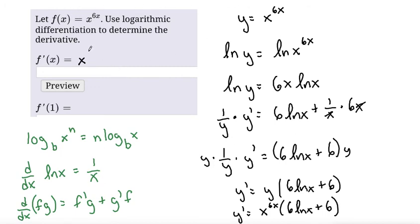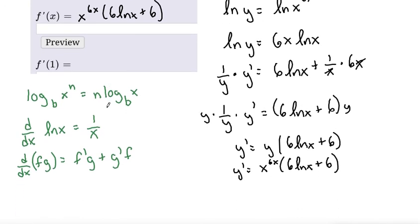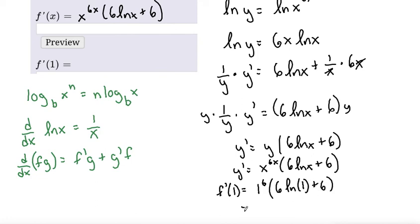So f prime of x equals x to the power of 6x times (6 ln x + 6). If we plug in x = 1, that gives us f prime of 1 equals 1 to the power of 6 times 1, which is just 1, times (6 ln(1) + 6). Since 1 to any power is 1 and ln(1) equals 0, we get 1 times (0 + 6), which equals 6.